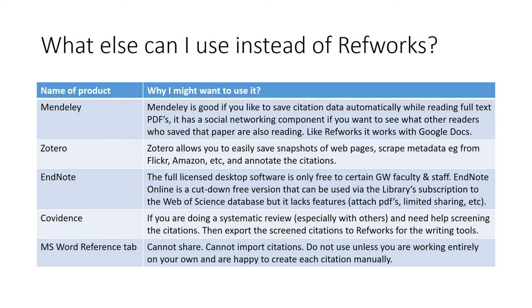A related question is what else is out there that you can use instead of RefWorks and why might you choose one of these other products. Mendeley is good if you'd like to save citation data automatically when reading full-text PDFs of journal articles. It also has a social networking component so you can see what other readers who saved a paper are also reading, and like RefWorks it works nicely with Google Docs.